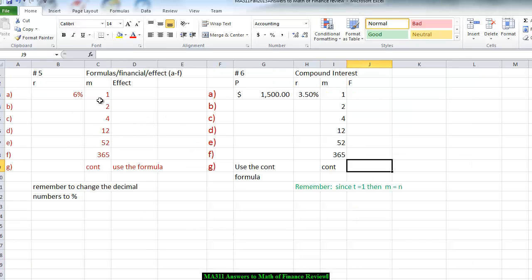Question number five, we want to calculate the effective interest of 6% compounded Part A annually, which is one time a year, semiannually, which is two times a year, quarterly, which is four times a year, monthly, which is 12 times a year, weekly, which is 52 times a year, daily, which is 365 times a year, and finally, continuously.